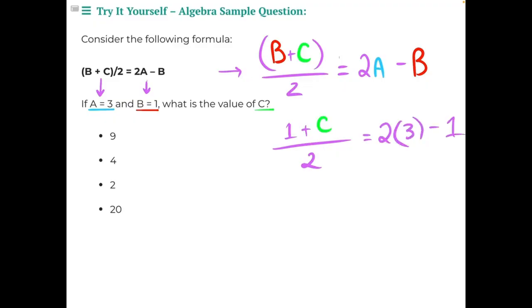Now that we've finished our substitutions, we need to simplify both sides of the equation and isolate C. Let's start with this side of the equation. Starting with our parentheses, 2 times 3 gives us 6 minus 1 gives us 5. Now we can bring down everything on the other side of the equals sign.